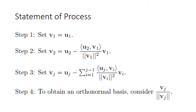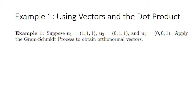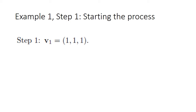Now let's see the Gram-Schmidt process in action. We consider three vectors from R3: U1 = (1,1,1), U2 = (0,1,1), and U3 = (0,0,1), and we will apply the Gram-Schmidt process to obtain orthonormal vectors. The first step is to set V1 equal to U1, so our first orthogonal vector is (1,1,1).